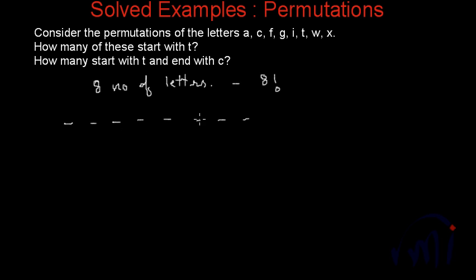So these are the eight number of places. And if the word has to start from letter T, this first place will have only one choice. And then we will be left with seven places and seven number of letters, which can be arranged in seven factorial ways.